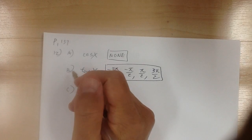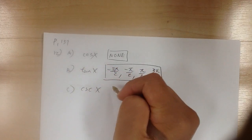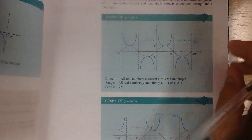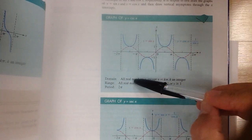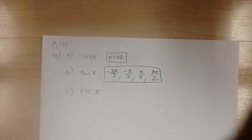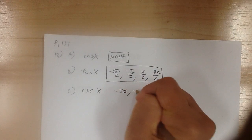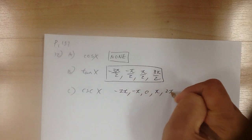For 12c, cosecant x — looking at the cosecant graph for its asymptotes, they occur at negative 2pi, negative pi, 0, pi, and 2pi. Those are the undefined values.